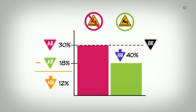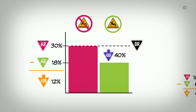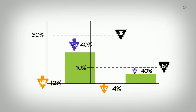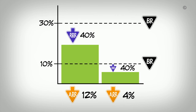In the first study, the baseline risk for a fracture is 30%, the absolute risk reduction is 12%, and the relative risk reduction is 40%. In the second study, even though the relative risk reduction stays the same at 40%, when the baseline risk drops to 10%, the ARR decreases to 4%. These two examples illustrate how baseline risk for an outcome influences the absolute risk reduction, even though the relative risk reduction remains the same.